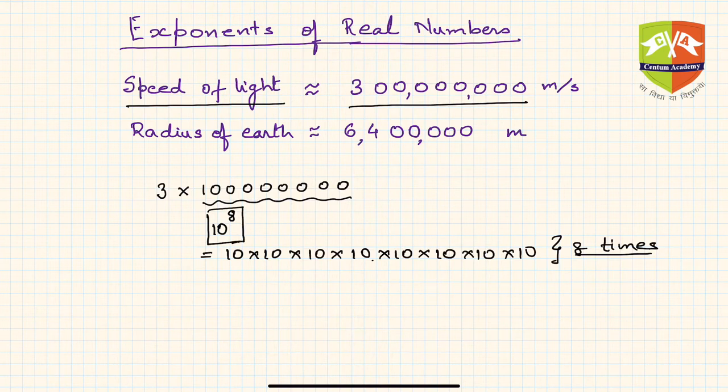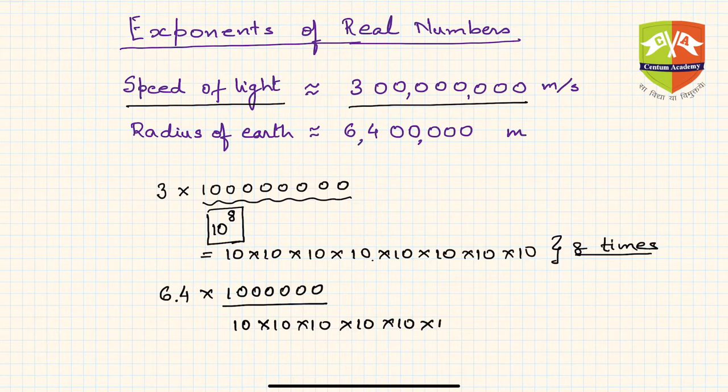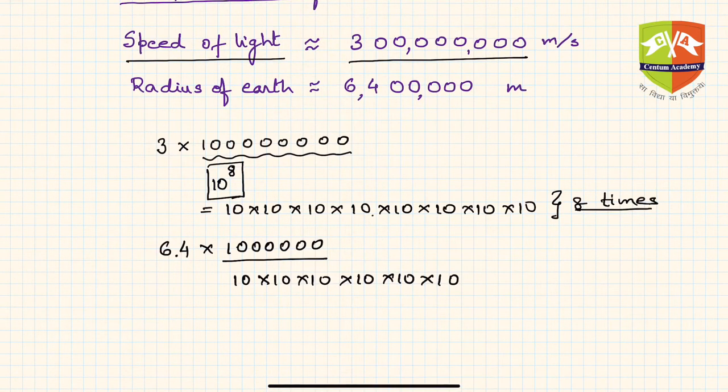Similarly, let's say I had to write radius of the Earth. The radius is 6.4 times one followed by six zeros. This is nothing but one million, and one million can be written as 10 times 10 times 10, six times.